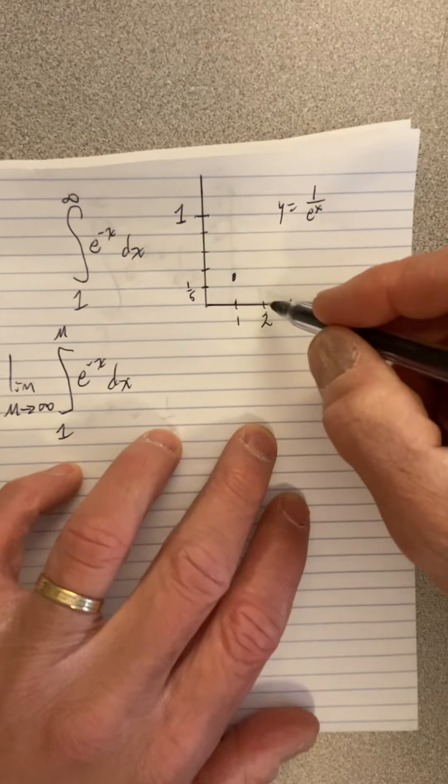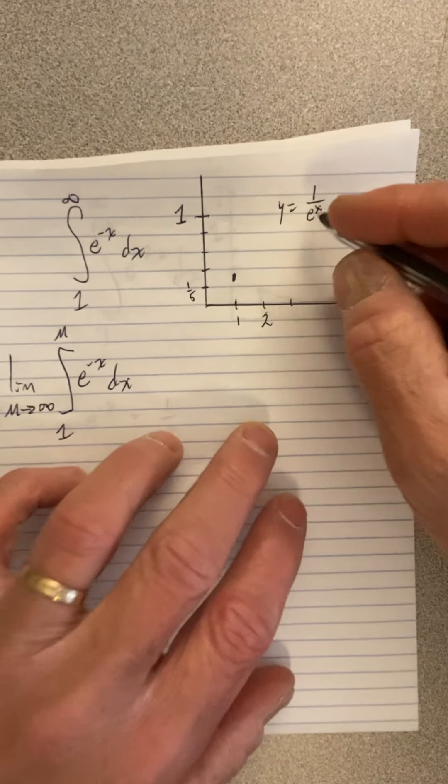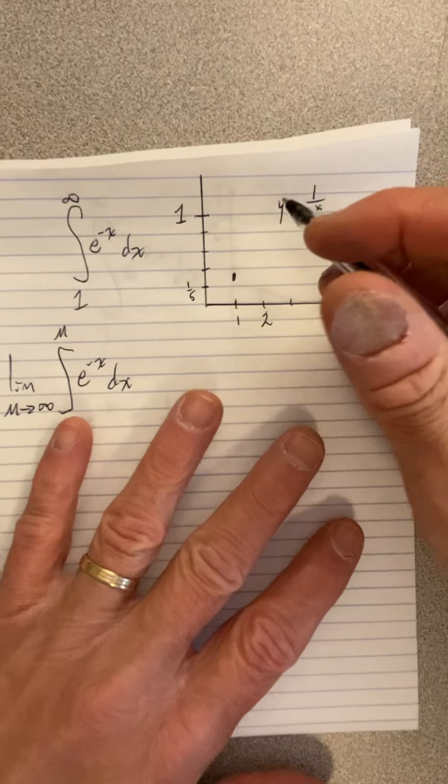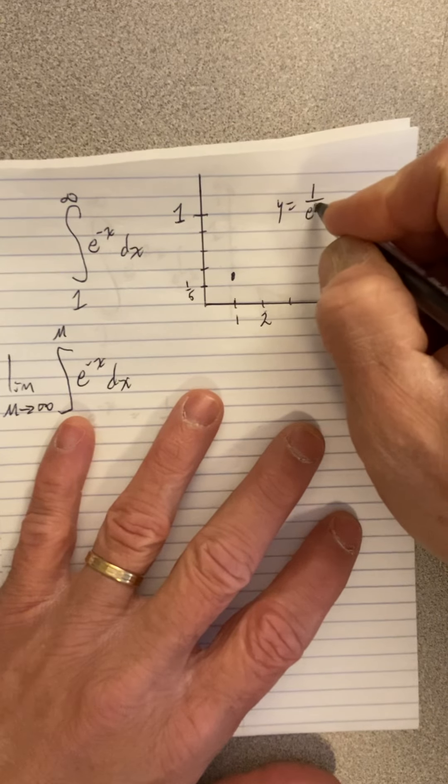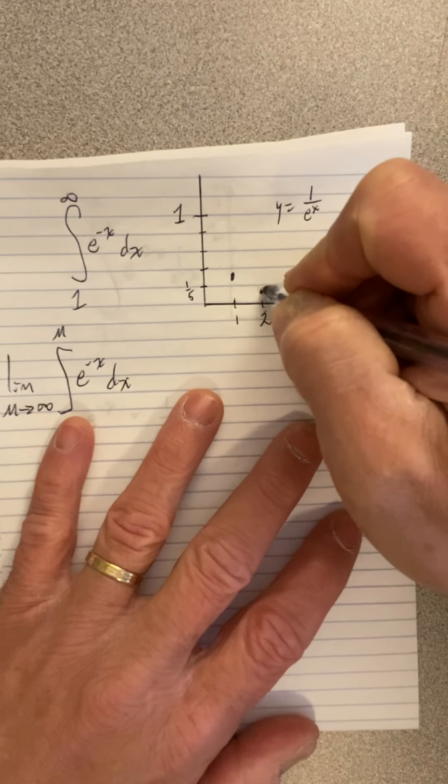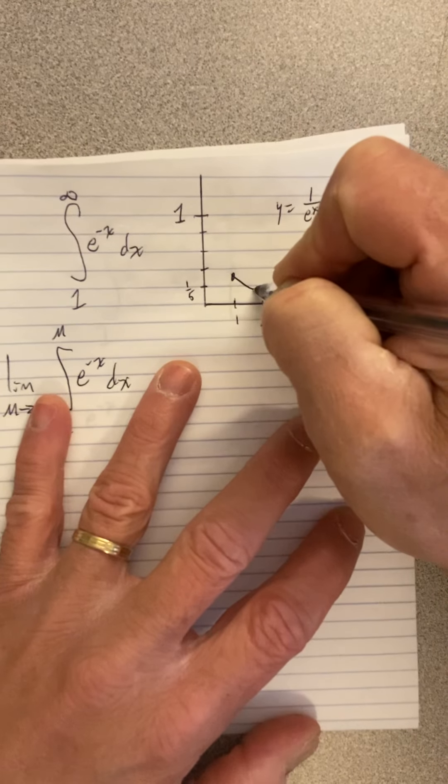If I put in 2, I get 1 over e squared. That's going to be what? E squared is a little bigger than 7, not quite as big as 9. So we're bigger than 1 ninth but smaller than 1 seventh. So about right here.